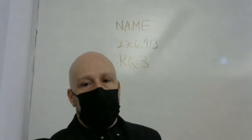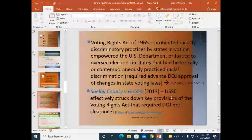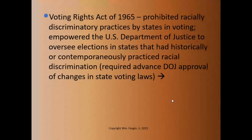We were talking about the Voting Rights Act, and specifically it had two components. The first component was that it made it a violation of federal law to use any of these tactics — any of these devices that were commonly used, particularly in southern states, to prevent people from voting on the basis of race. Things like literacy tests, any sort of discriminatory practice.